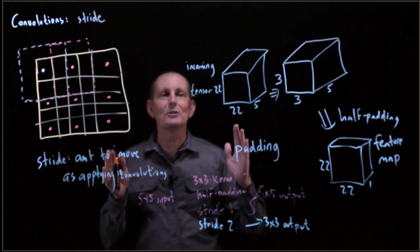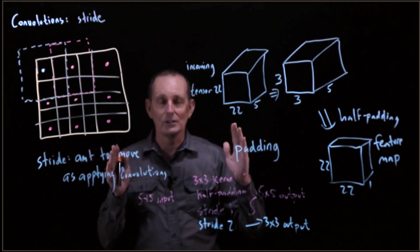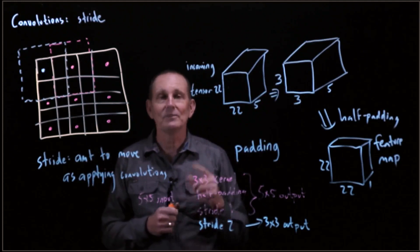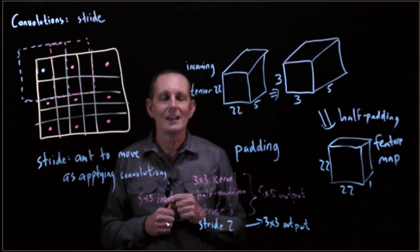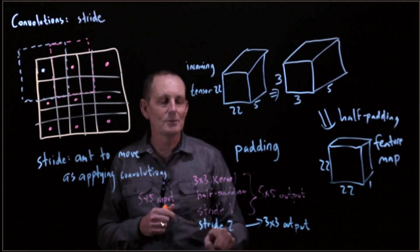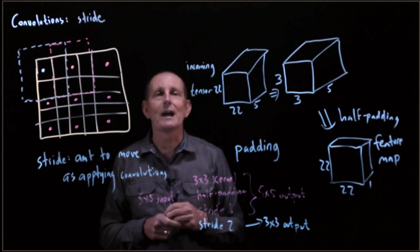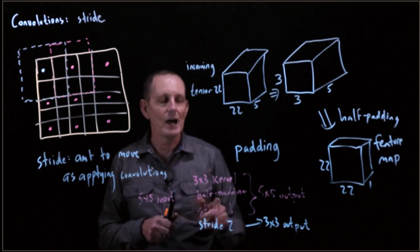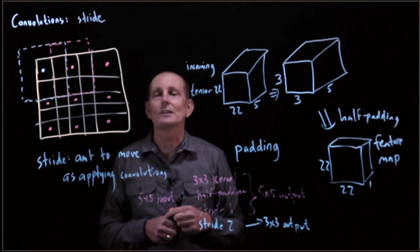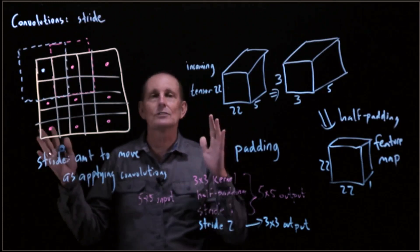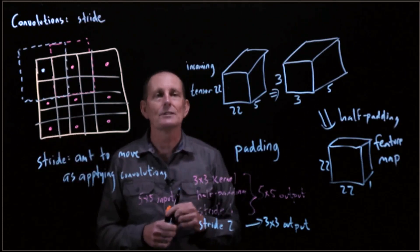If we had a 5 by 5, we would reduce by a total of 4 in each dimension. That's one way we can reduce dimensions. A second way we can reduce dimensions is by using a stride that's not 1.